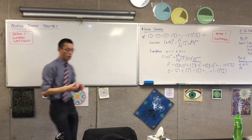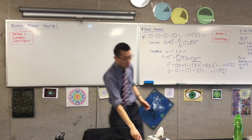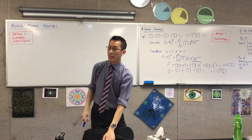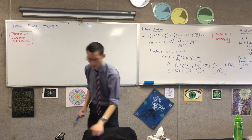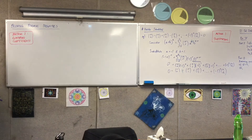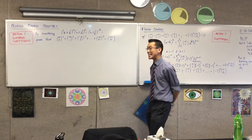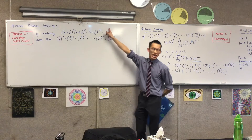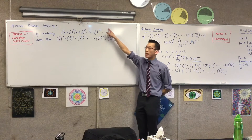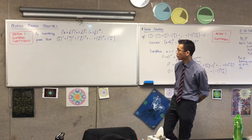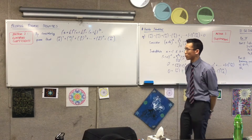Remember I said before — most questions, the vast majority, they give you a Lydian. So here's the Lydian I'm going to give you for this particular result, which looks really terrible. This is what I mean by a Lydian: they'll say, here's a result that obviously has some binomials in it, so therefore you can take advantage of the binomial theorem.